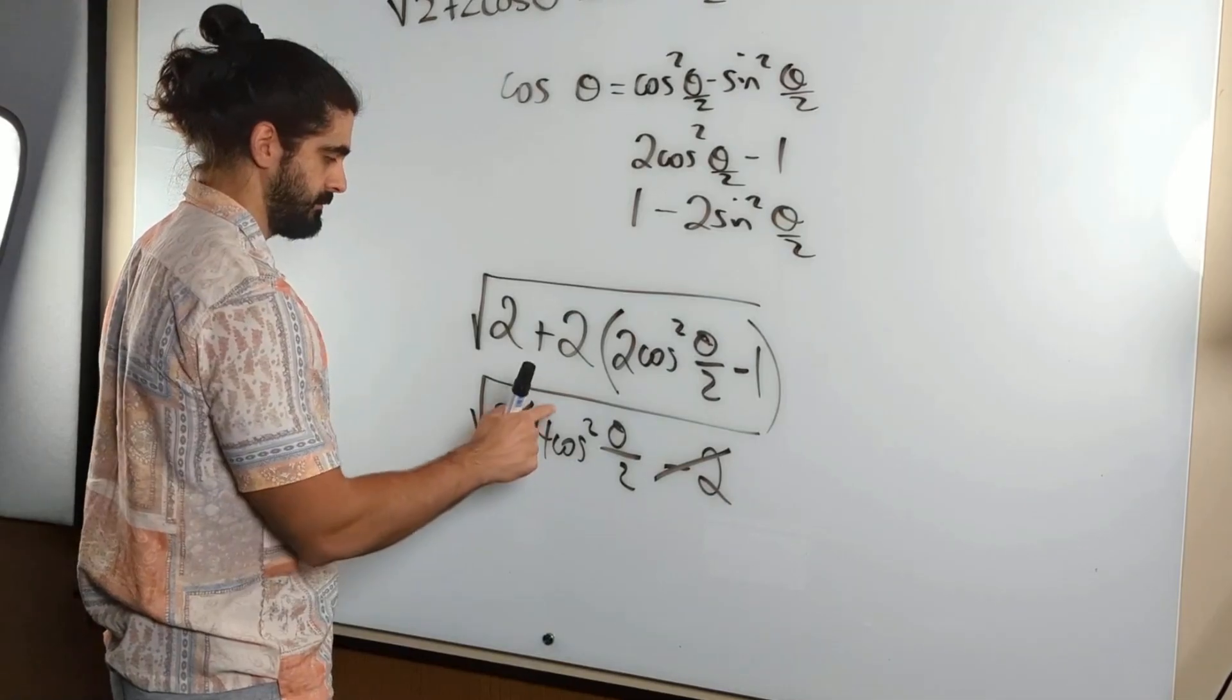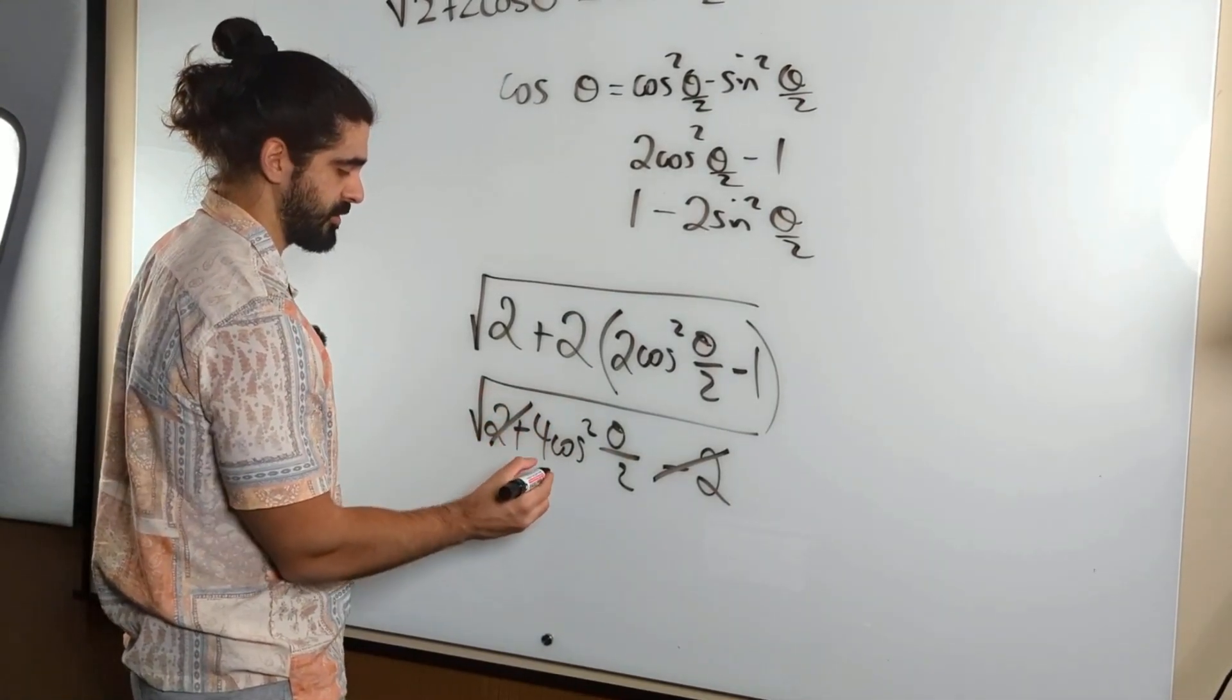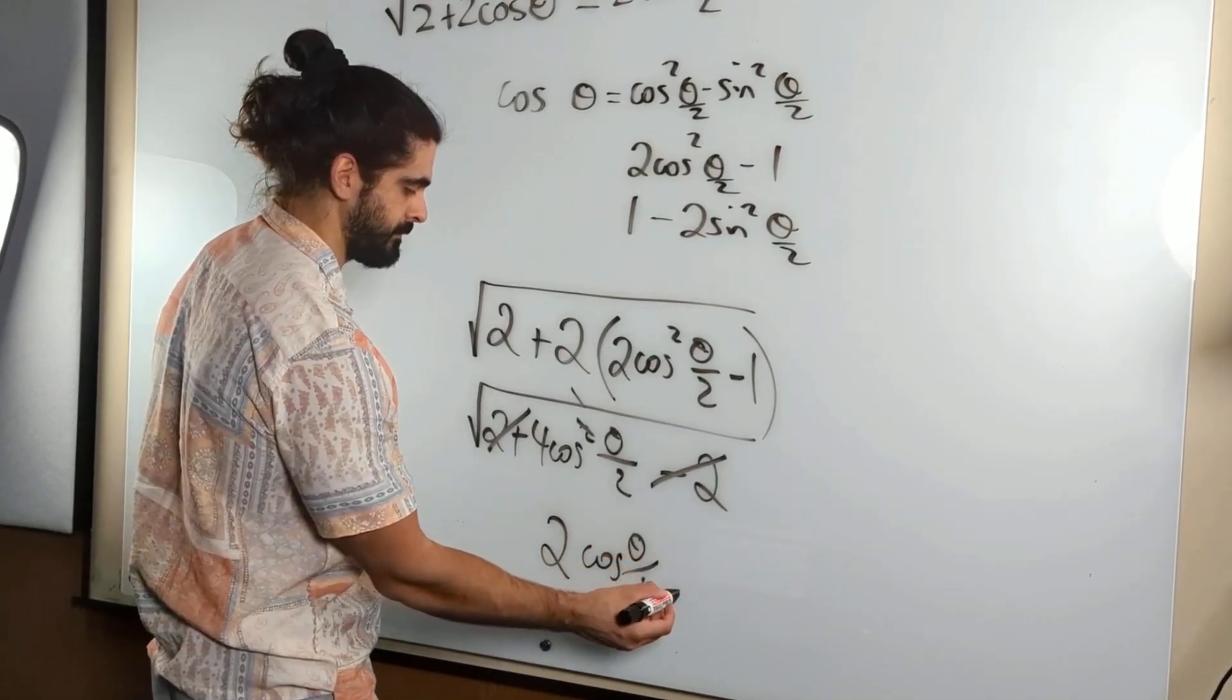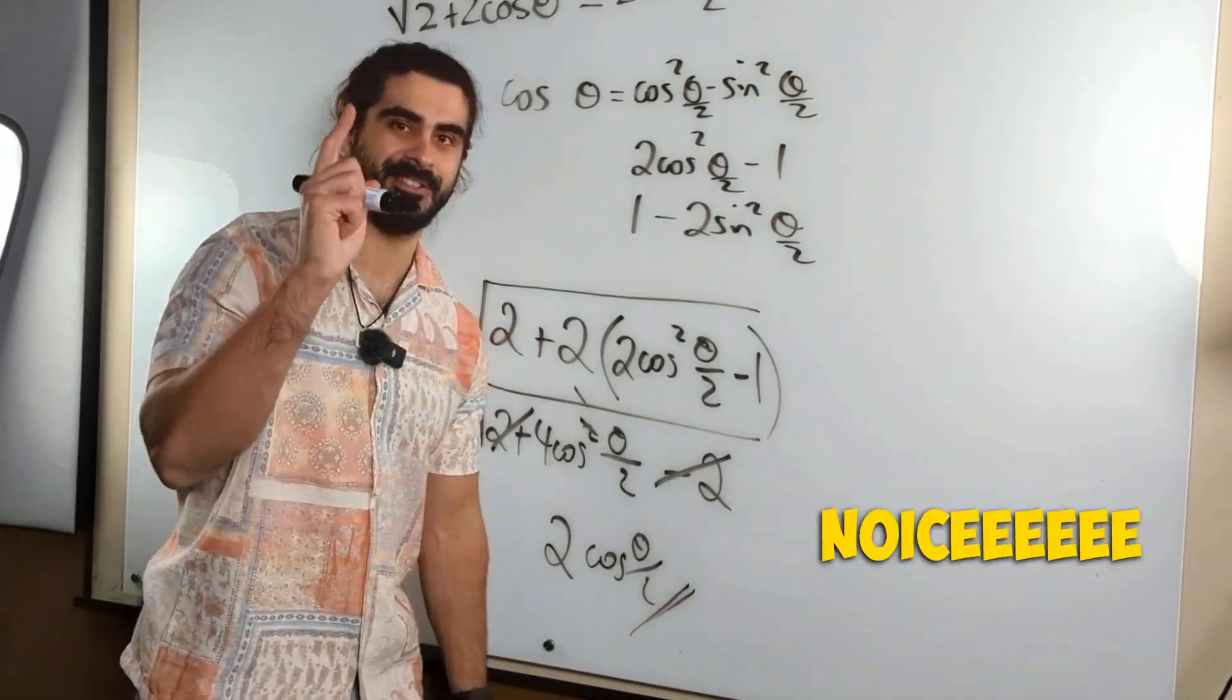And there you go. Boom. Root of 4. We're taking the positive root here. So 2. Then the root cancels the squared. And that's proved. Nice.